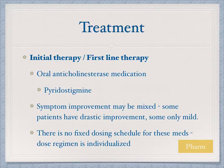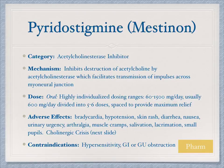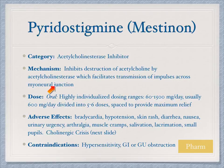Everybody has a different response to pyridostigmine — some respond well at small doses, others require high doses, and some on high doses have minimal response. Every patient is an individual and therapy must be individualized. The mechanism of pyridostigmine is that it inhibits the destruction of acetylcholine by acetylcholinesterase, which facilitates transmission of impulses across the myoneural junction. Side effects to watch for include bradycardia, hypotension, skin rash, salivation, lacrimation, and small pupils due to increased cholinergic receptor stimulation.